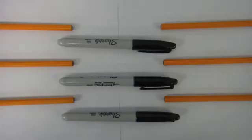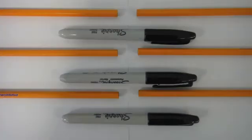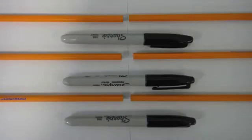During muscle contraction, the actin filaments represented by the pencils slide past the myosin filaments represented here by the black Sharpie pens.